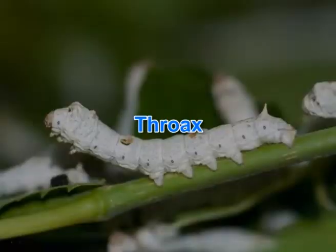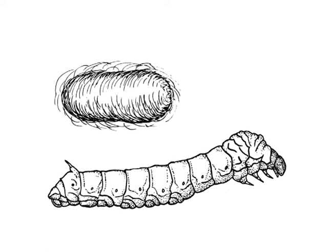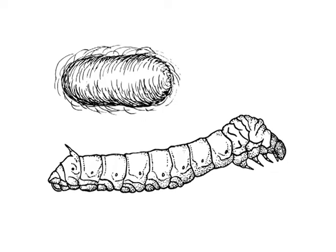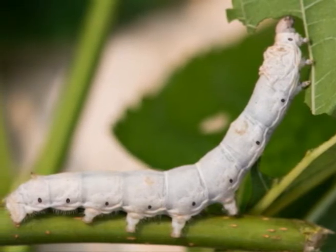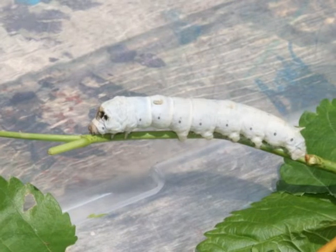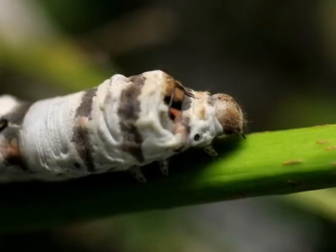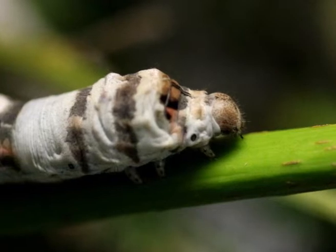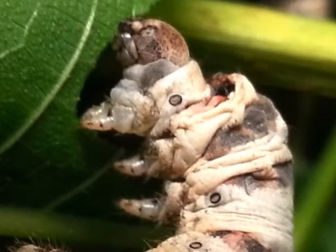The spinneret arises from the prementum and lies between the labial palps. The thorax is three-segmented: prothorax, mesothorax and metathorax. Each of the three thoracic segments carries ventrally a pair of legs, each comprising three jointed segments. These are the true legs, conical in shape with sharp distal claws, used not for crawling but for holding mulberry leaves while feeding. The silkworm has spiracles on the dorsal side of the mesothorax.